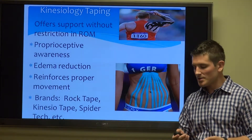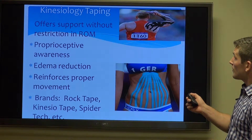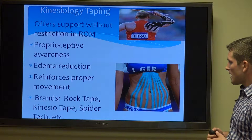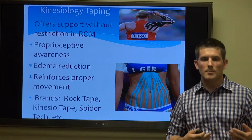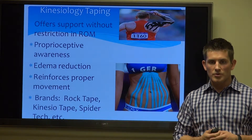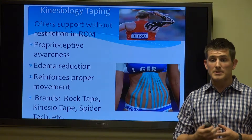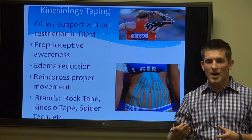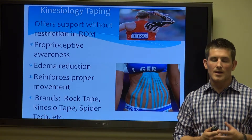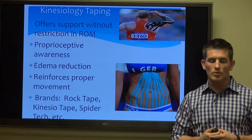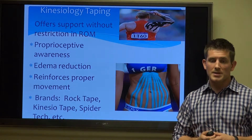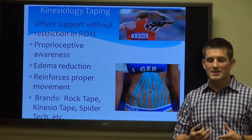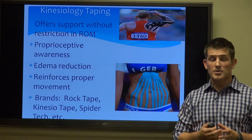Kinesiology taping was made popular in the Olympics. There are many different brands, and some work better than others. Basically, it offers support without a restriction in range of motion — allowing support for muscles, especially when preceding an injury. It provides proprioceptive awareness; when talking about the low back and thoracolumbar fascia, it helps with posture control and makes the muscles work more efficiently, at least in the interim. There's also some edema reduction — you can use it on a sprained ankle or wrist to get swelling and fluid out. And done correctly, certain taping patterns can reinforce the postures we want you to get into.